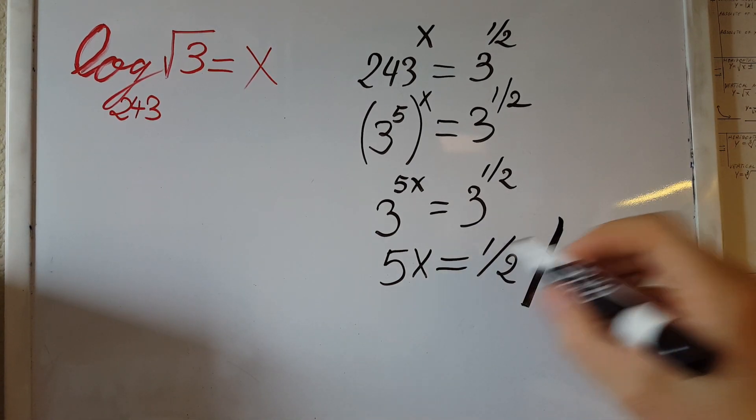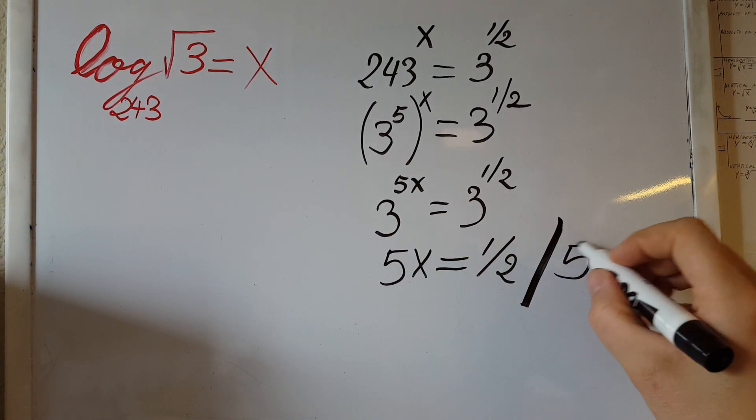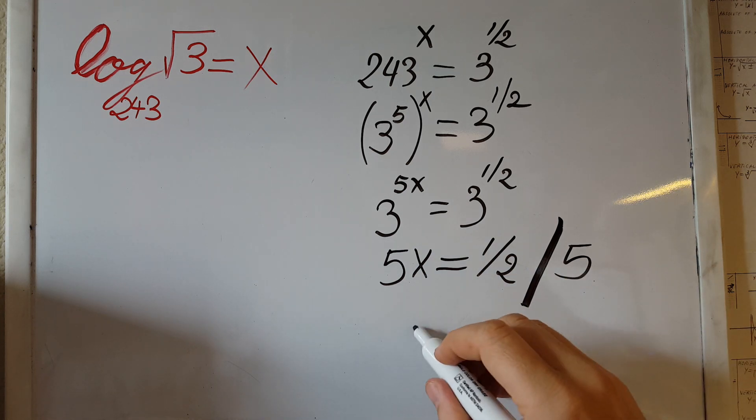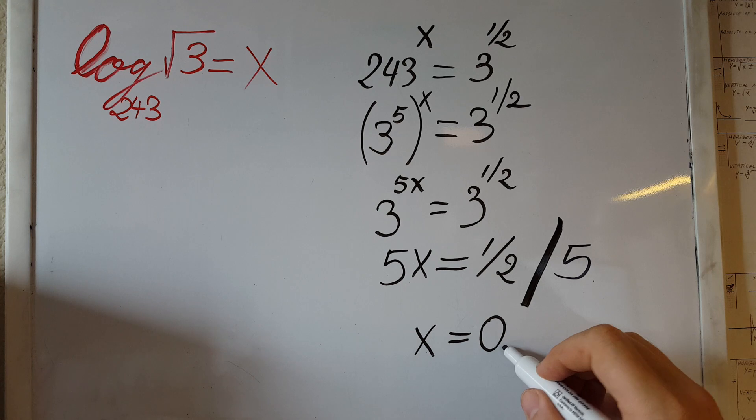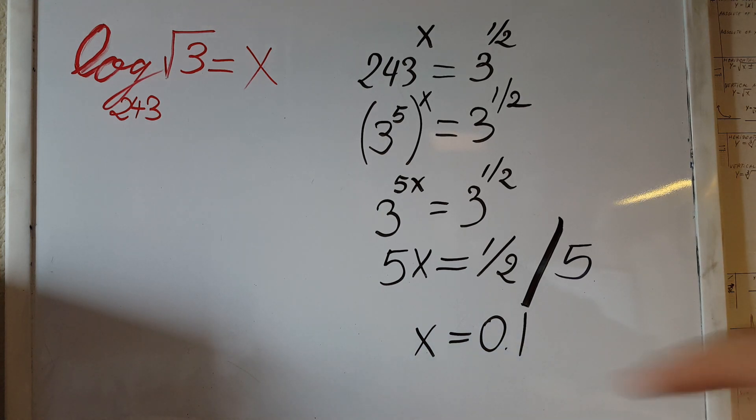Now all we have to do is divide both sides by 5, and we're going to find that x is equal to 0.1.